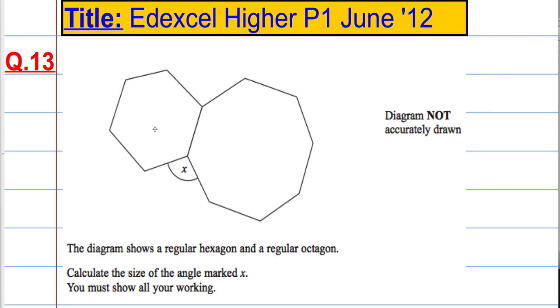Question 13. We're given a regular hexagon and a regular octagon and we're asked to calculate this angle x and we need to show all our workings.